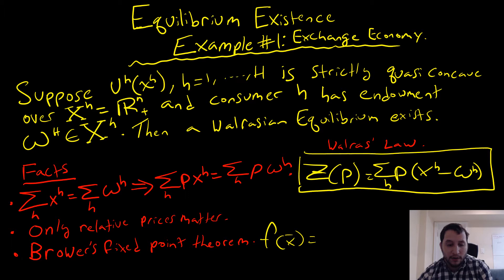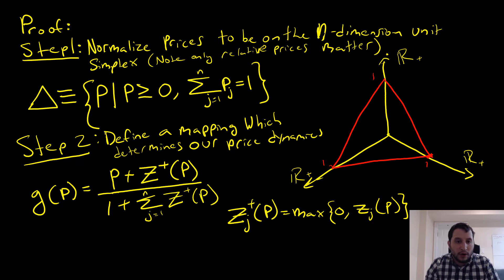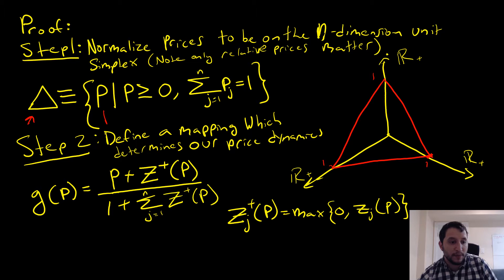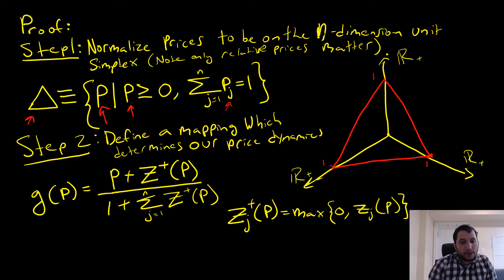Step number one is that we're going to normalize our prices to be on the n-dimensional unit simplex. Note that only relative prices matter. This symbol here represents our unit simplex. p here is just a price vector — a vector of prices — such that each element in our price vector is greater than or equal to zero and the sum of all these elements is equal to one.